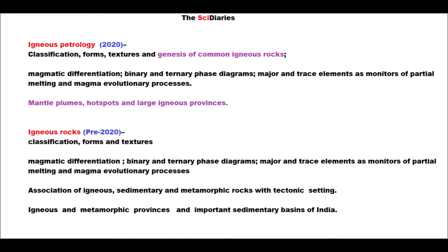The mantle plume, hotspot, and large igneous provinces — shown here in purple — is a new addition to the syllabus. Previously, they had one line covering igneous and metamorphic provenance and important sedimentary basins of India. Now they have changed this to large igneous provinces, so they are mainly going to focus on large igneous provinces, hotspots, and mantle plumes. Probably one question might be there in 2021 from this portion.